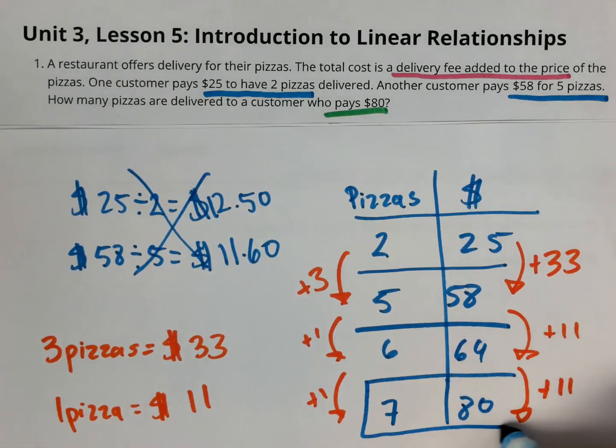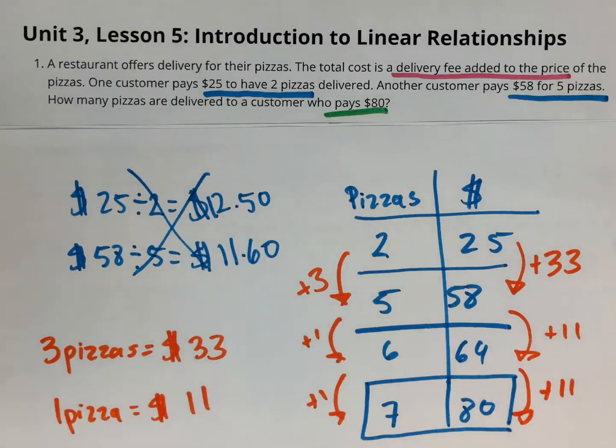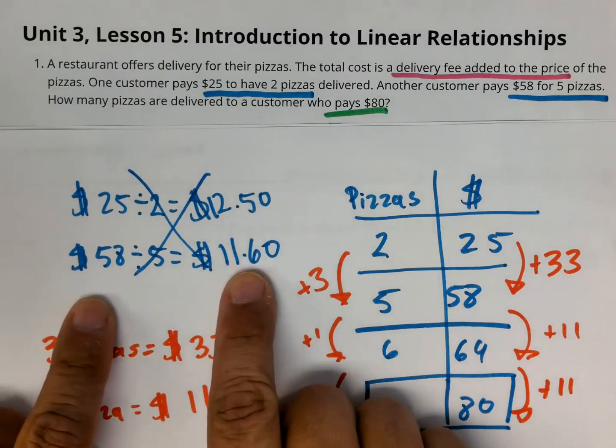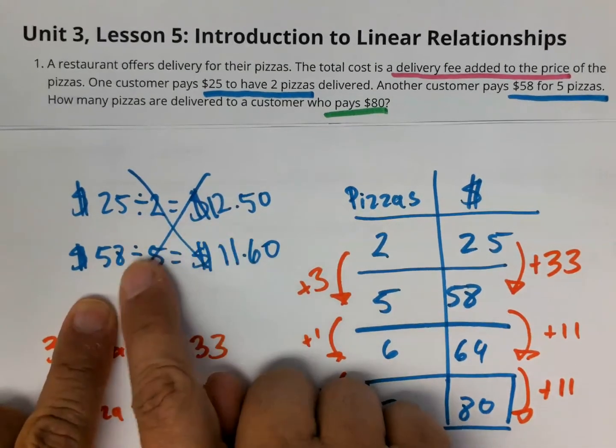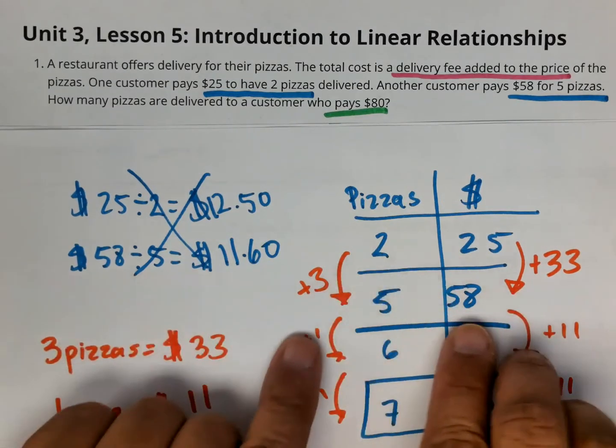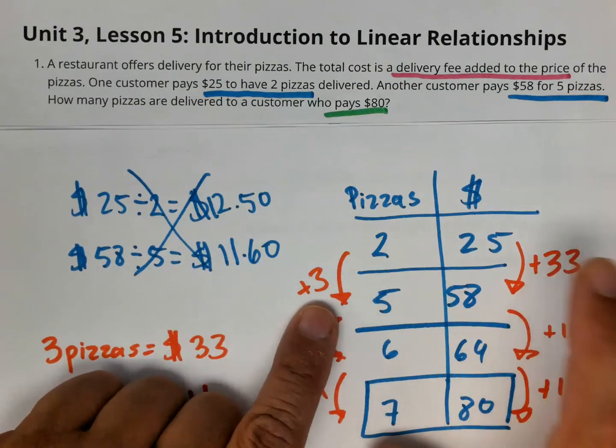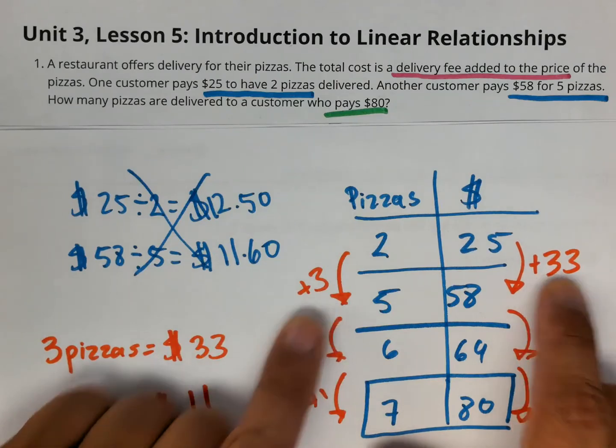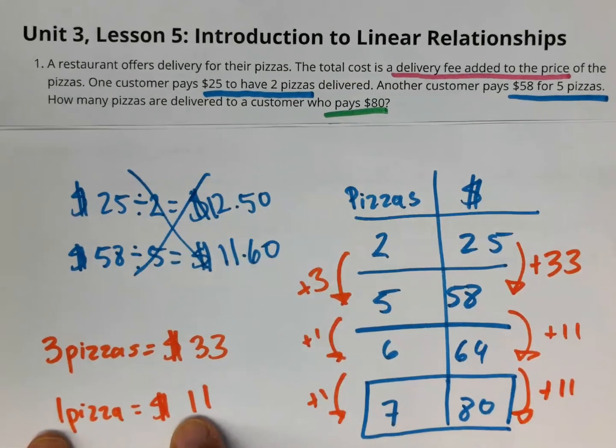So now here is the answer to the question, which is how many pizzas is there for $80? Seven pizzas. So the main thing that we notice here in this problem is that we cannot just multiply because the multiplying pattern does not work. So I made a table and found this part here that three pizzas is $33. Then I divided that out to find the price of one pizza.